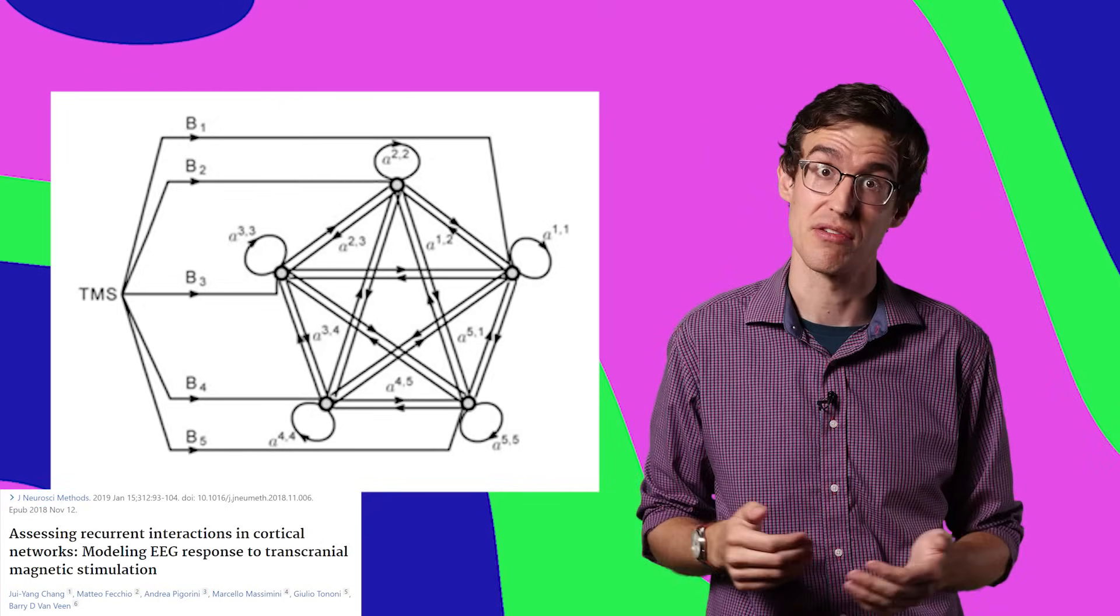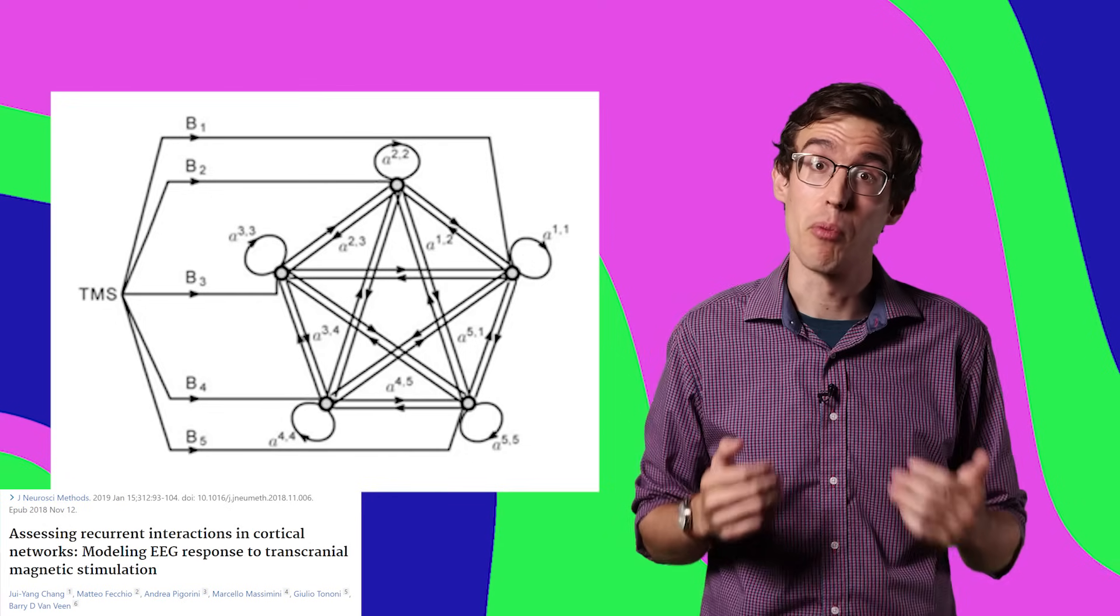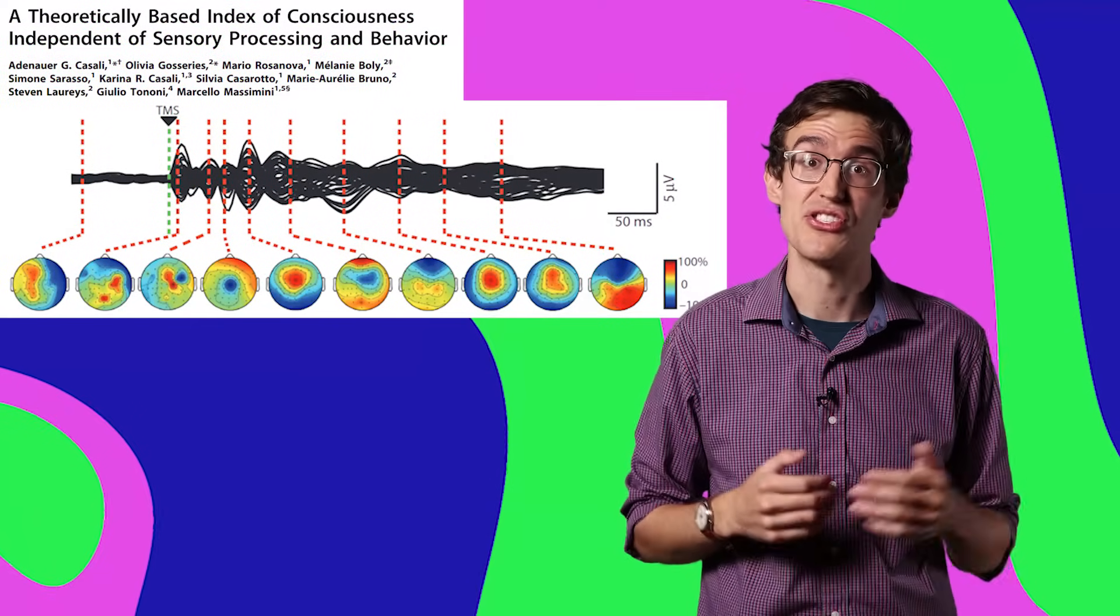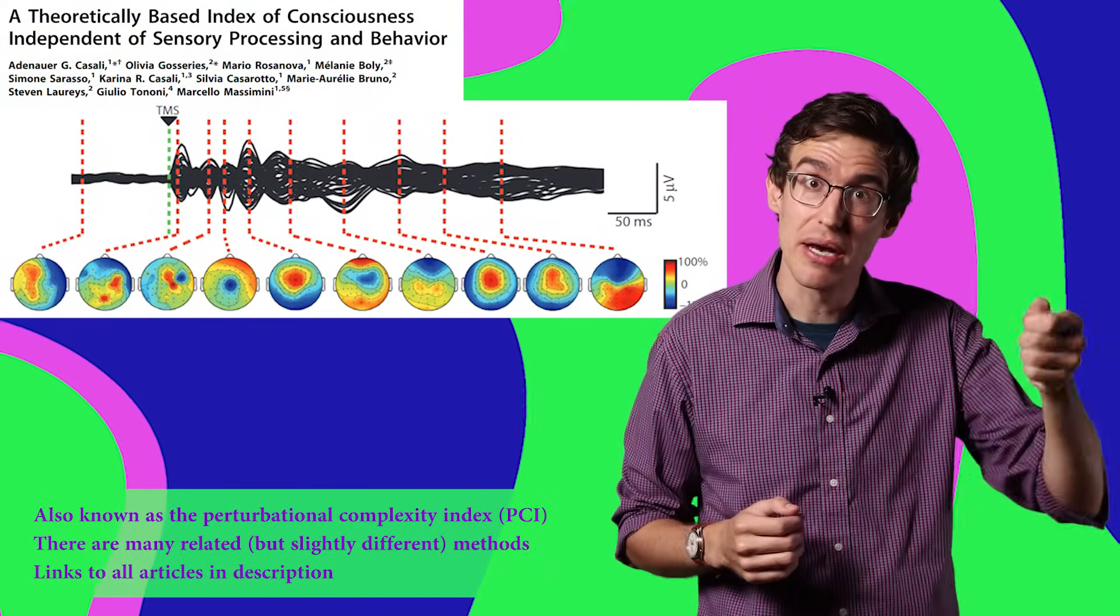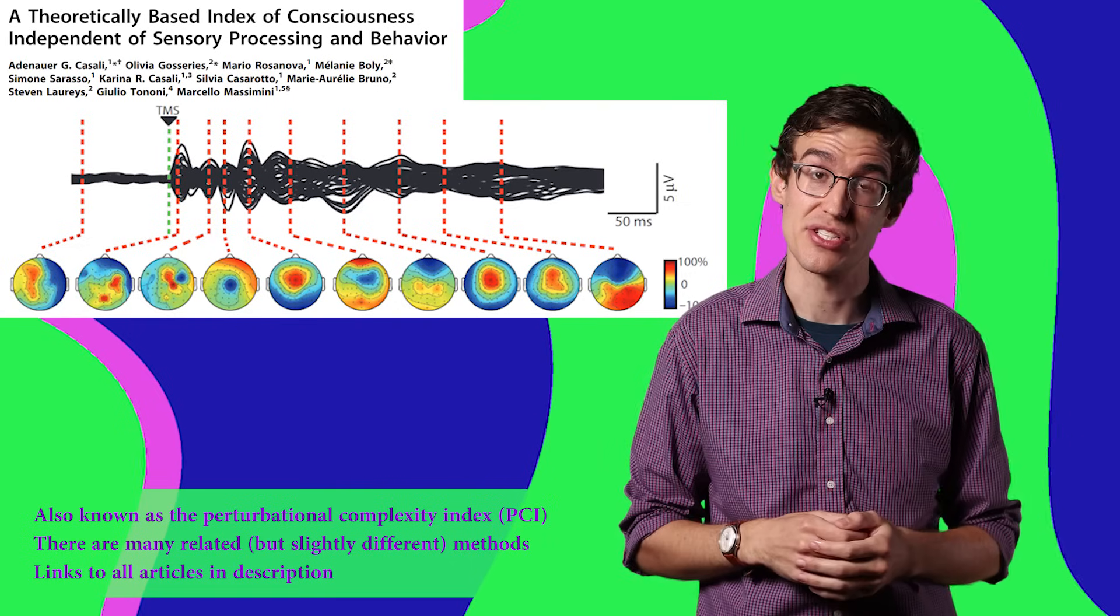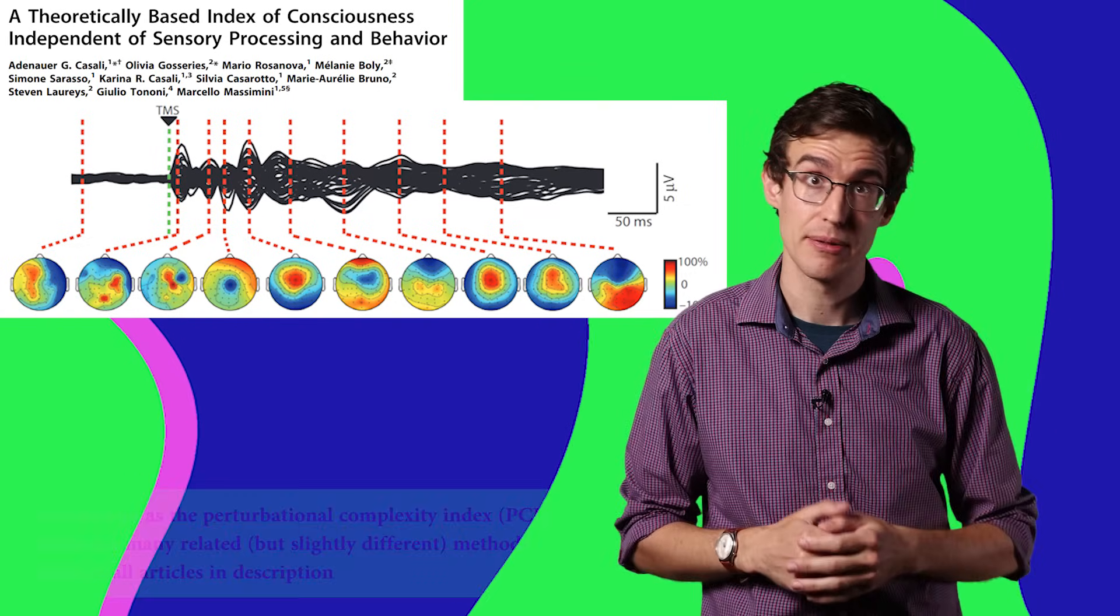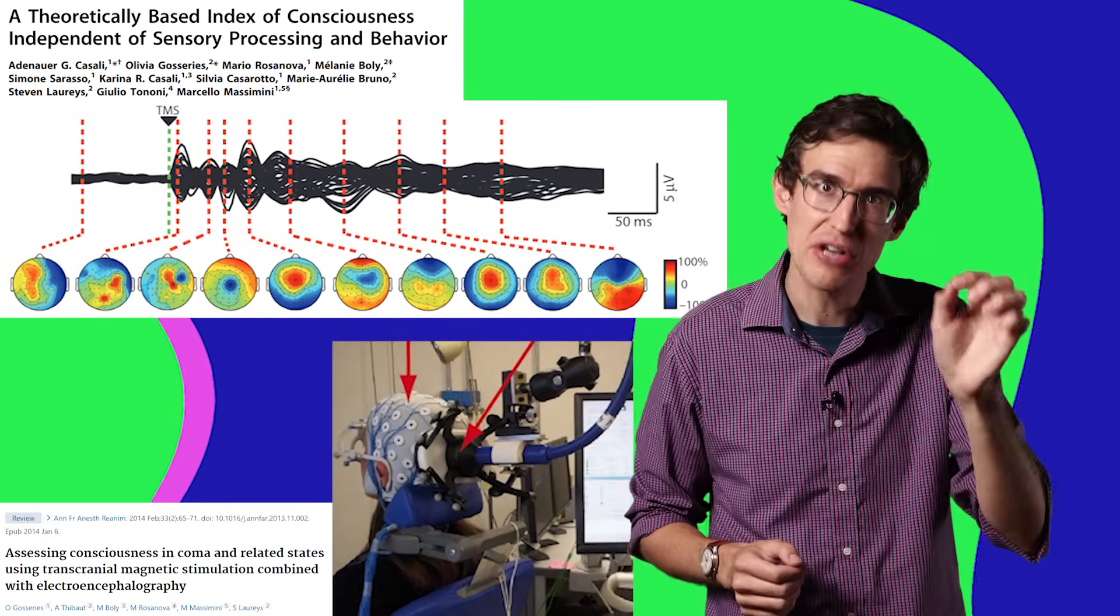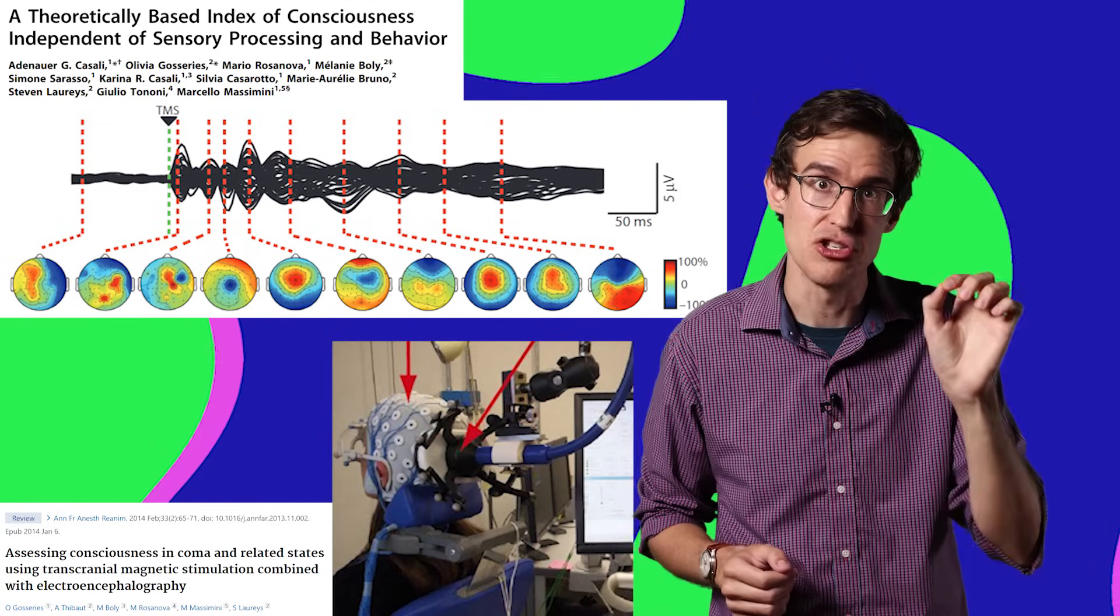And there's some evidence of this in humans. You can get a rough estimate of brain integration with a method called zap and zip. It's like ringing a bell and seeing how long it reverberates, except instead of a bell, you ring the brain. You zap the brain with an electromagnet and record its response with an EEG.